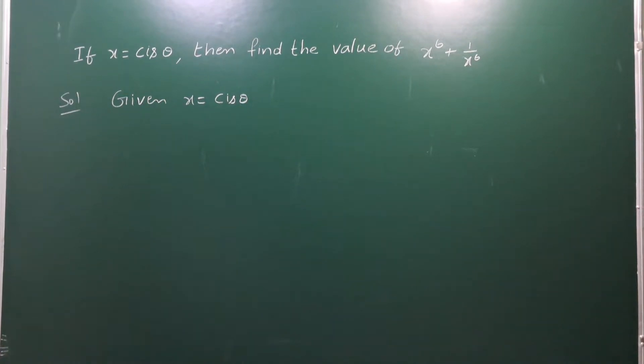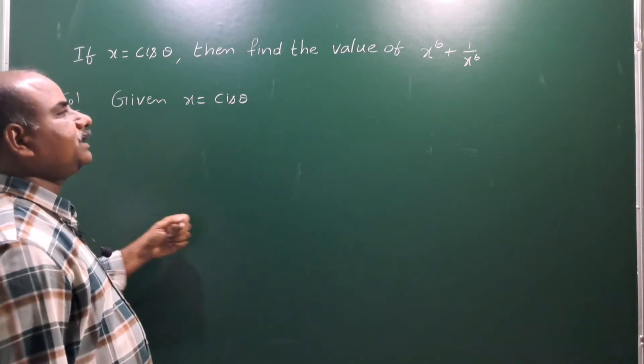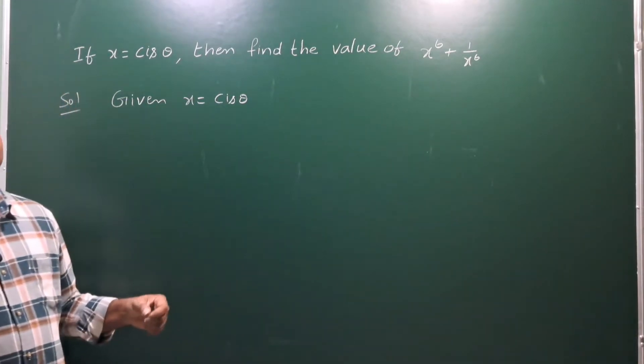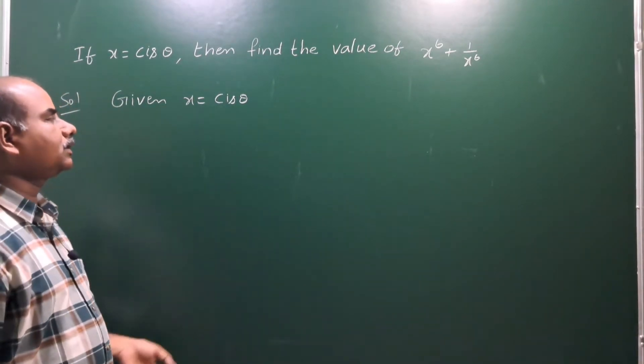Okay, next problem. If x is equal to cis theta, then find the value of x power 6 plus 1 by x power 6.